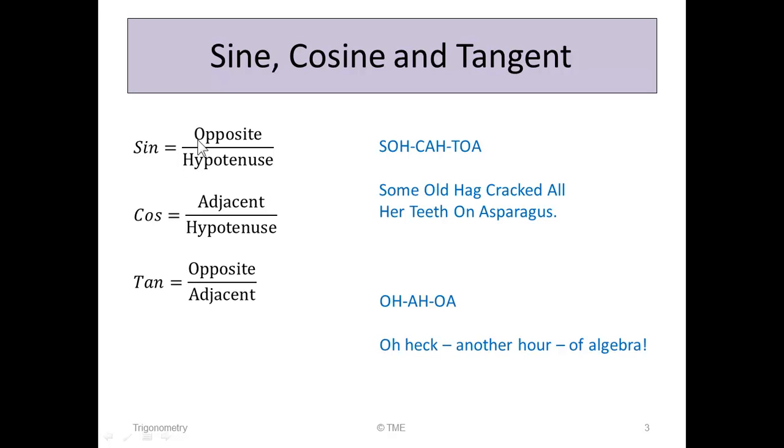In each case, when we're saying opposite over hypotenuse, we mean the length of the opposite side over the length of the hypotenuse, or the length of the adjacent over the hypotenuse, or the length of the opposite over the adjacent.